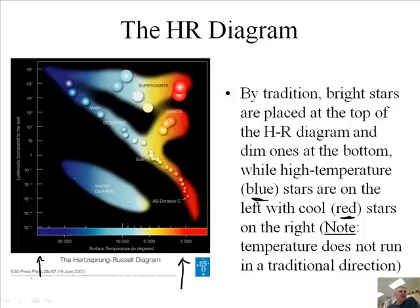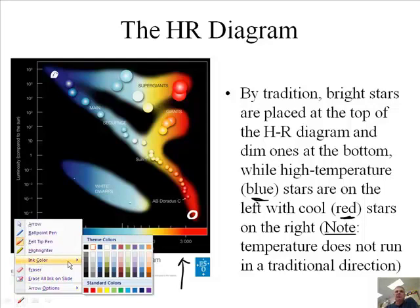Let's ask this question — maybe you should pause the video. Which star would be the coldest, dimmest star? Where would you find that on the graph? That's correct — it would be found right down here in the lower right. How about the hottest, brightest stars? They would be found up here in the upper left. So that's how you can tell the difference between the different varieties of stars in this diagram.